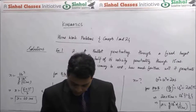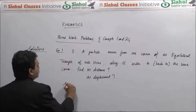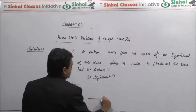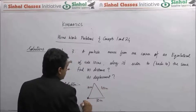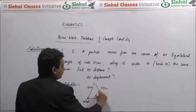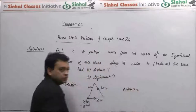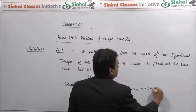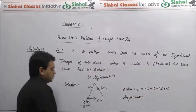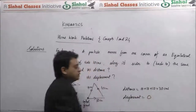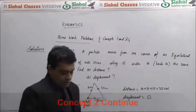Homework problem 3: A body moves around an equilateral triangle with side 10 cm and returns to its starting point. The distance travelled is the perimeter: 10 + 10 + 10 = 30 cm. The displacement, being the vector from initial to final position, is zero since the body ends where it started. This illustrates the key distinction between distance and displacement.